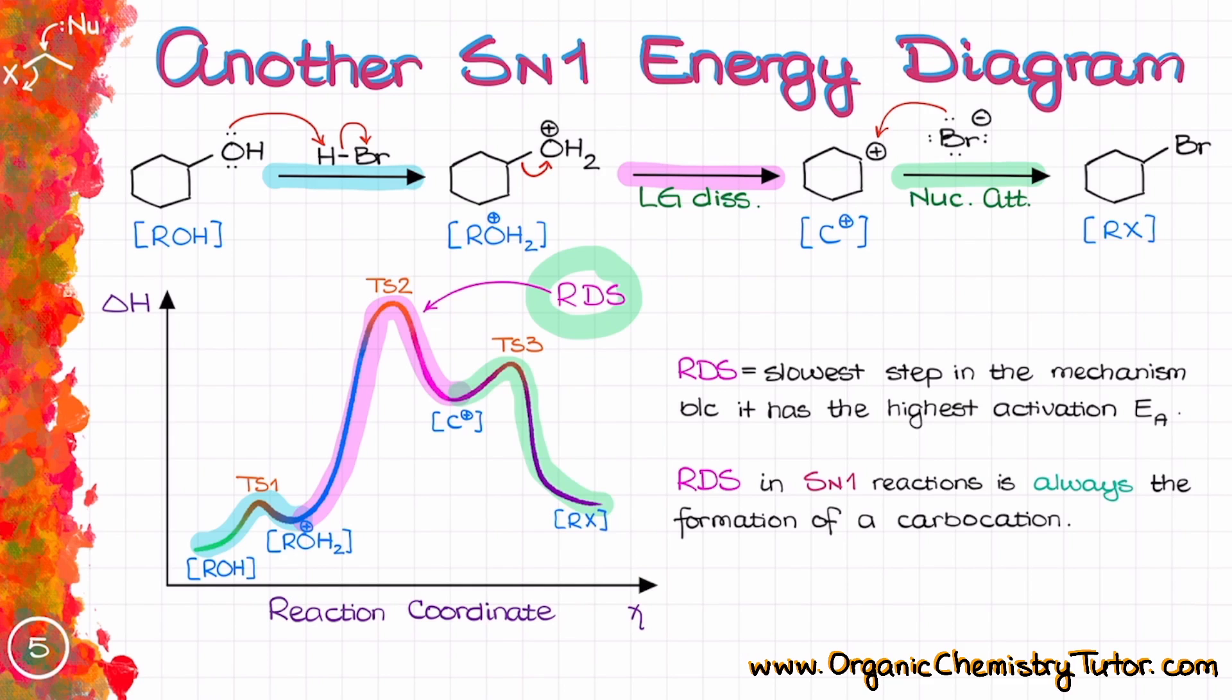So in any reaction that produces the carbocation, such as an SN1 reaction that we are talking about here today, or let's say an E1 reaction or electrophilic addition to alkenes or maybe electrophilic aromatic substitution or anything of that sort, the rate determining step will be the formation of the set carbocation.